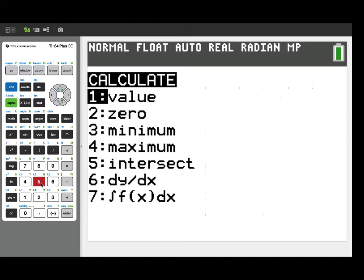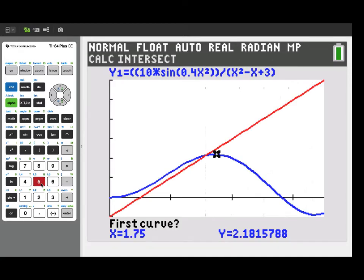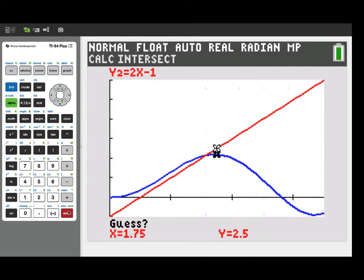So I'll get the calculate menu out, pull up intersect. We've only got two curves here, so our choice for first and second curve is pretty obvious. We're already pretty close to the intersection point, but I'll move it a little bit, do the guess. And we can see at time 1.57054, we've got our equal velocities of the two particles.